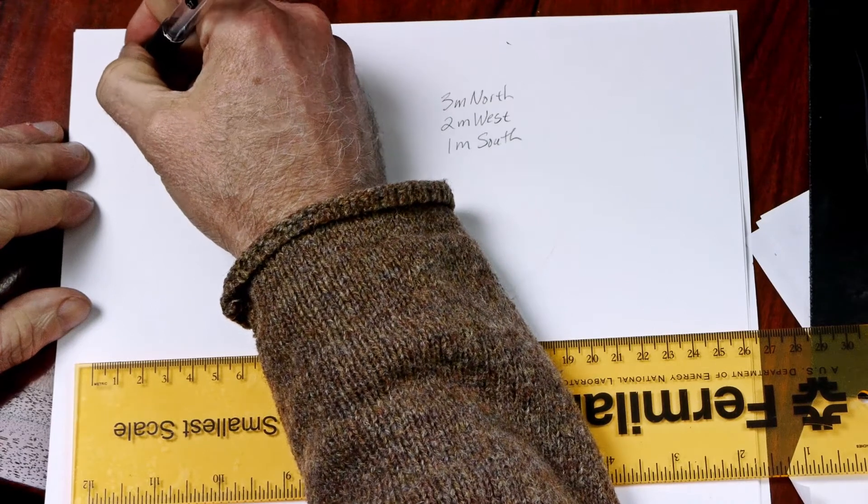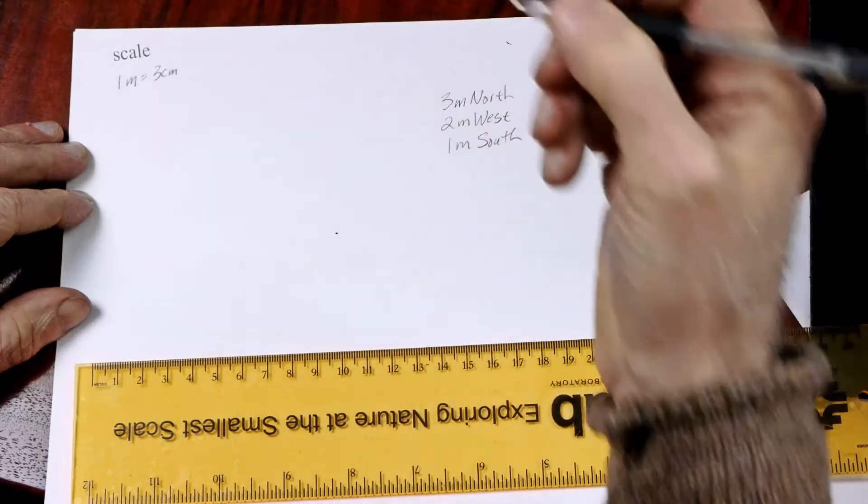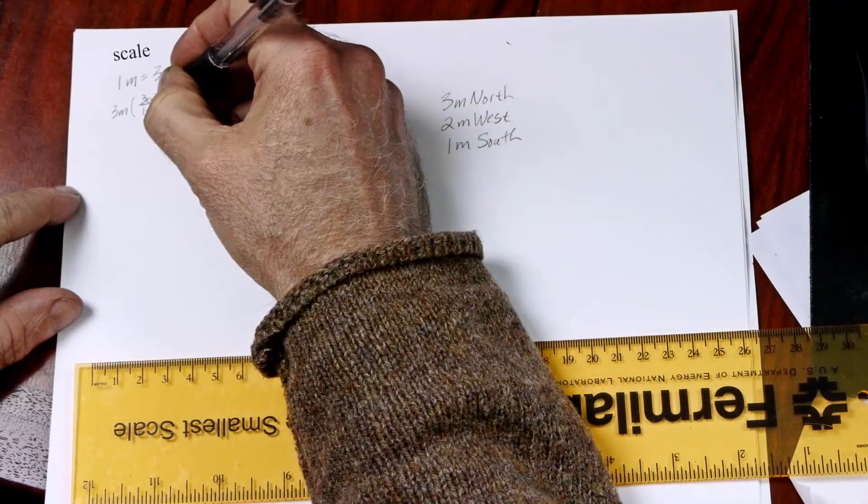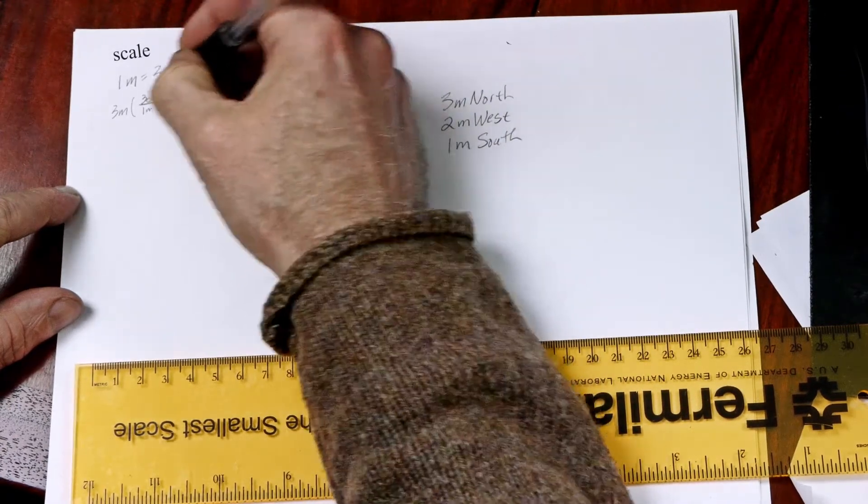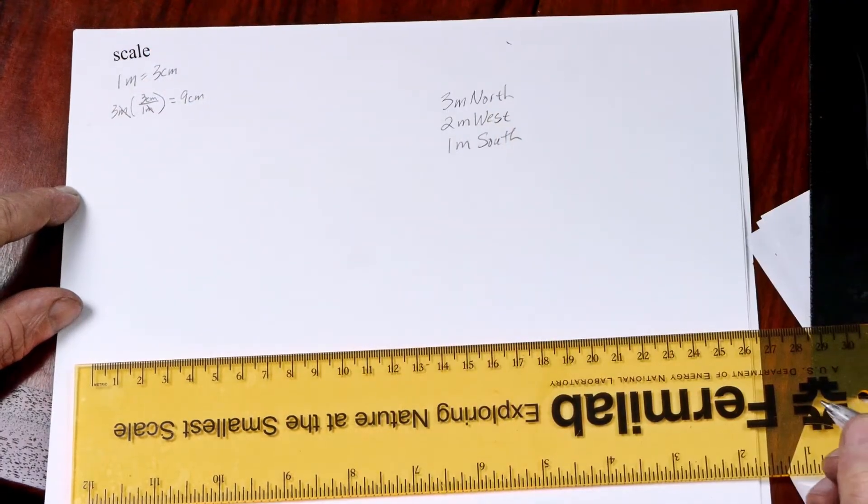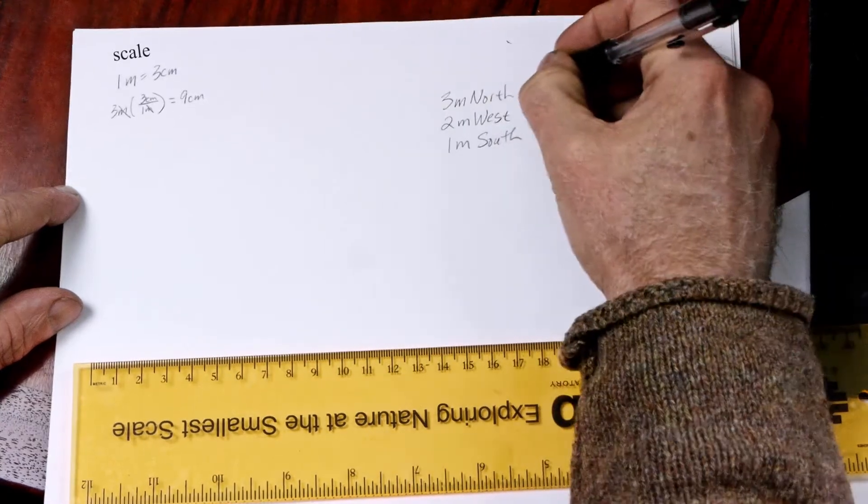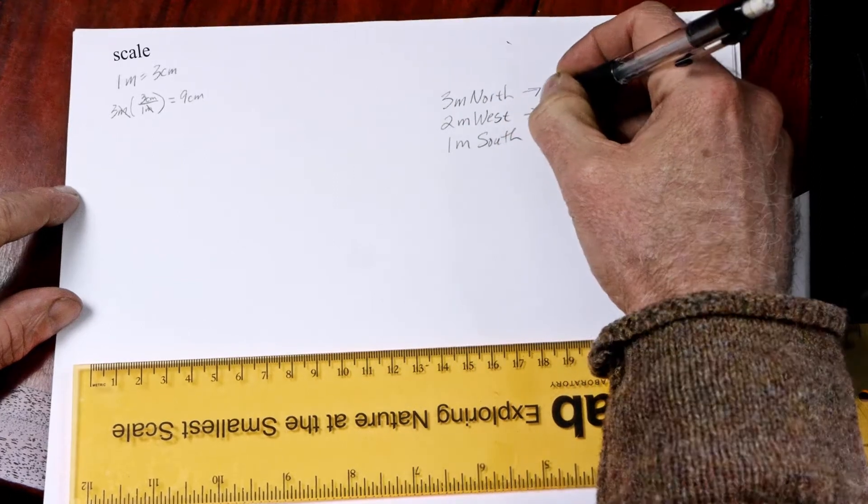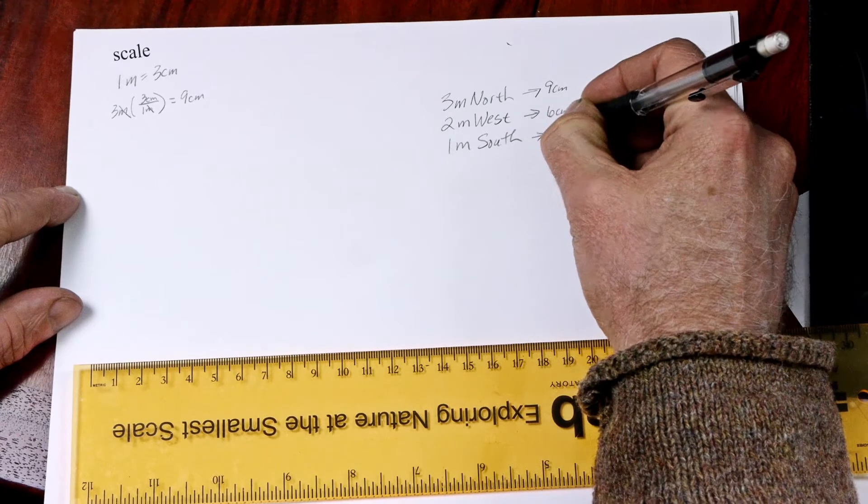One meter equals three centimeters on the page. Multiplying by one's, and we get nine centimeters. The meters divide out, and we get nine centimeters. And so this would be nine centimeters. This one's going to be six centimeters, and this one's going to be three centimeters.